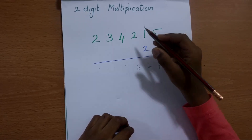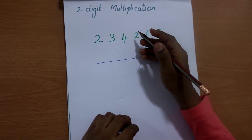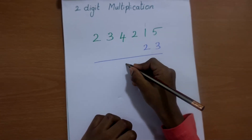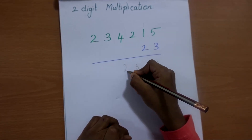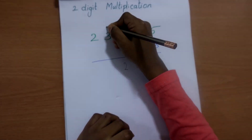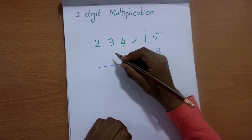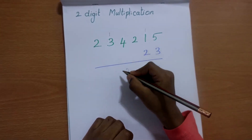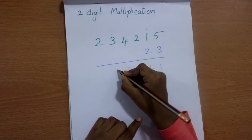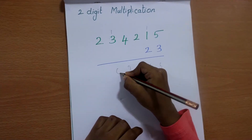3 times of 4 is 12, we add 2 and remaining 1. 3 times of 3 is 9, we add 1, that's 10.